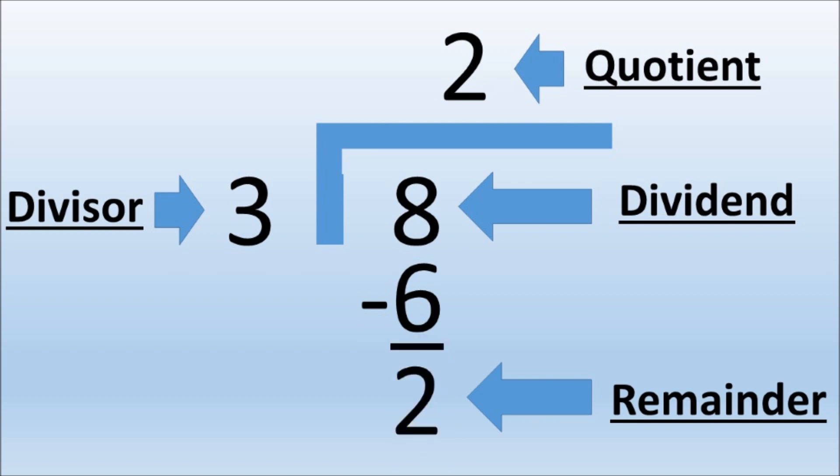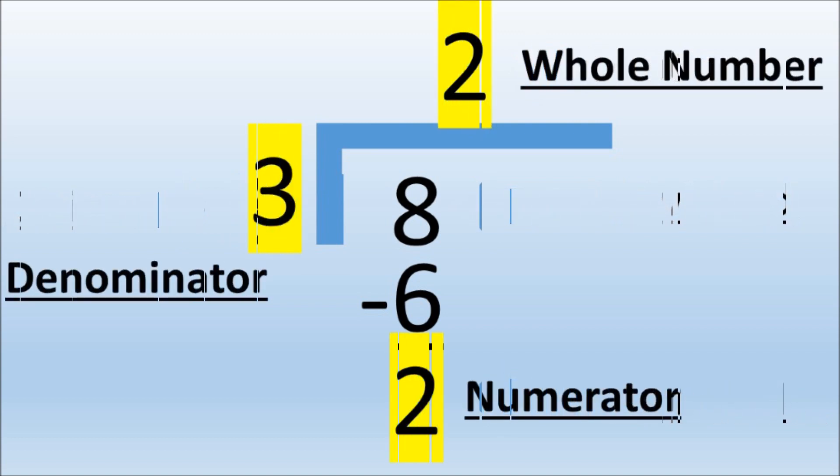Now we need to switch this division setup into fraction form. The divisor will be the denominator, the quotient will be the whole number, and the remainder will be the numerator.